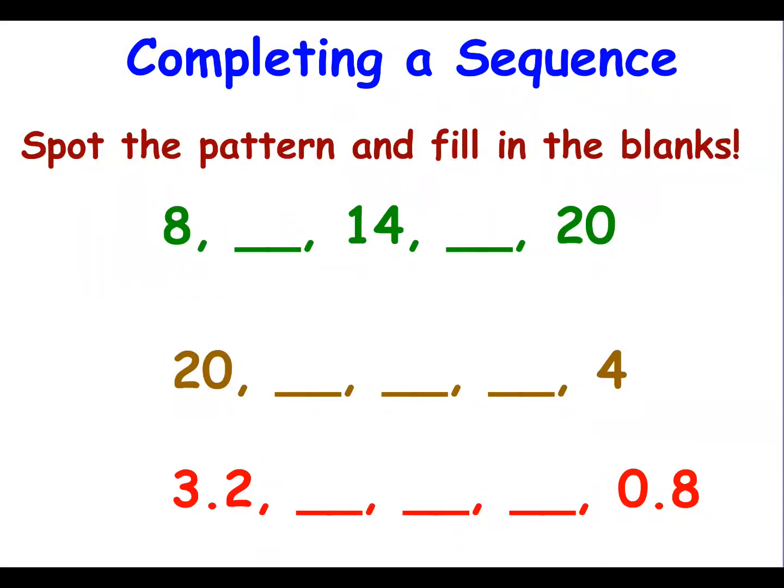Sometimes you might be asked to complete a sequence where the missing numbers are gaps within the sequence. Now, there's a bit of a trick to doing this. And this is to do with the gap you're looking at and the number of steps to fill that gap. So in this example here, I've got a gap of 6 and I have 2 steps. So if I divide the gap by the number of steps, it tells me what my rule is. I've added 3 for each step.